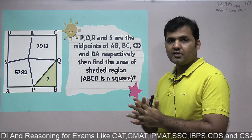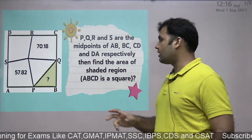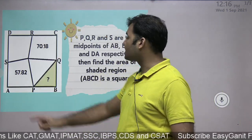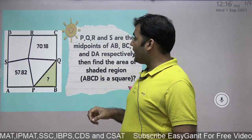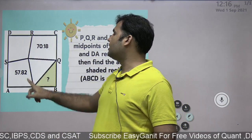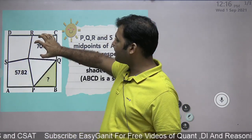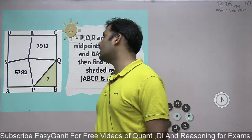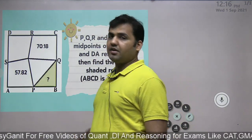Please subscribe to the channel so that you get updates of all the videos. In this particular question, P, Q, R, S are the midpoints of sides AB, BC, CD, and DA respectively, and an internal point inside the square is taken and joined with all the midpoints. The area of this quadrilateral and this quadrilateral is given to us — 57.82 and 70.18 — but we are supposed to find out the area of the shaded region.